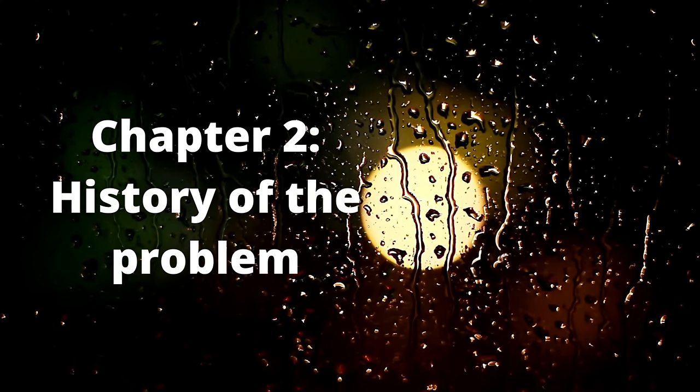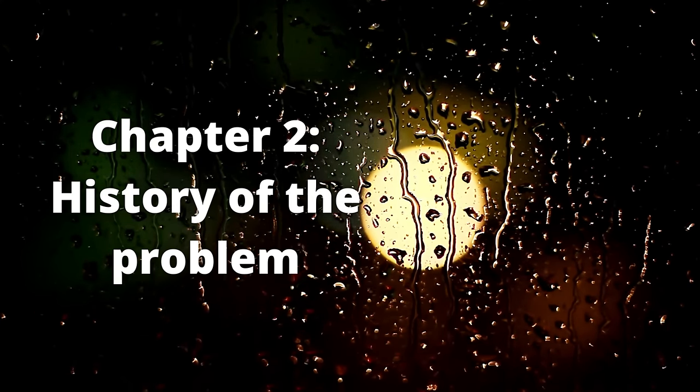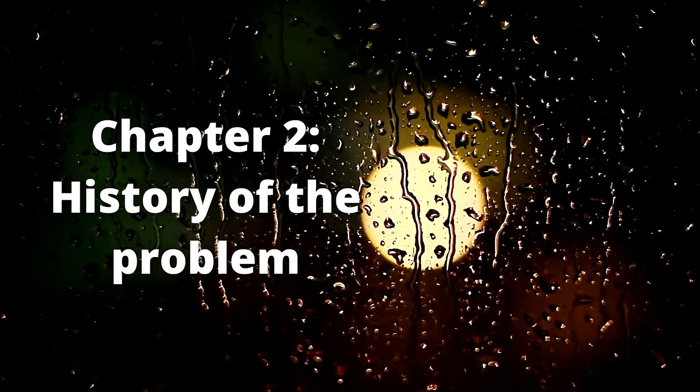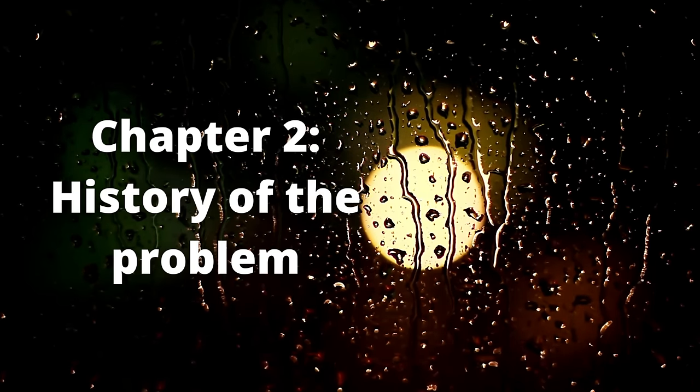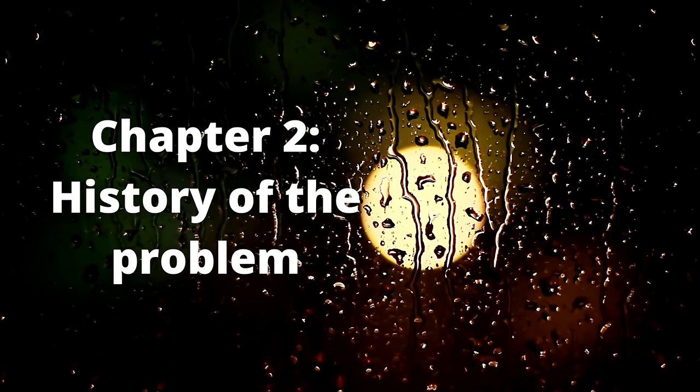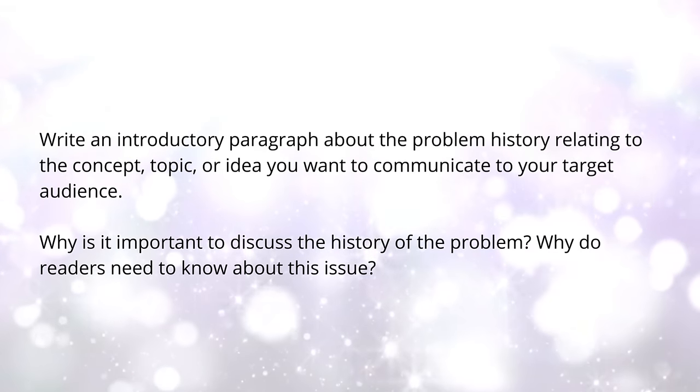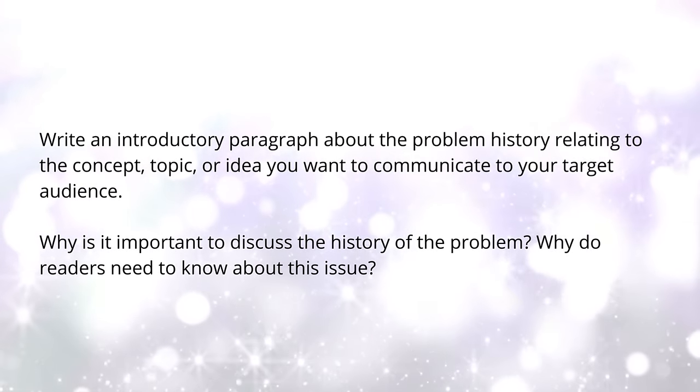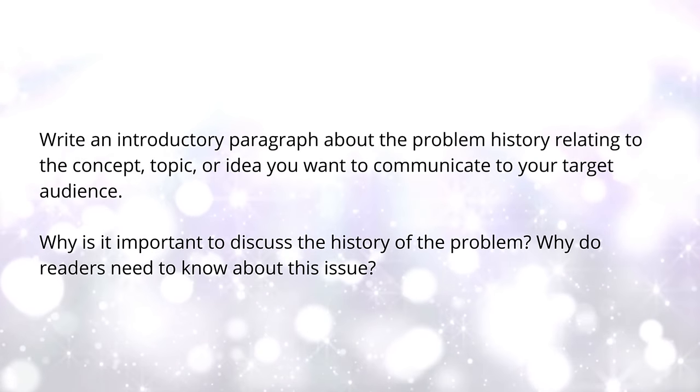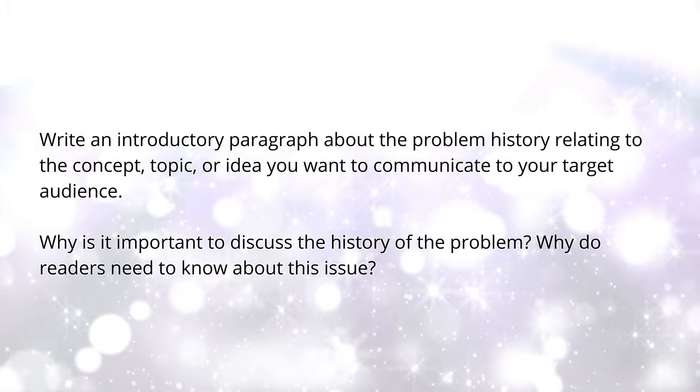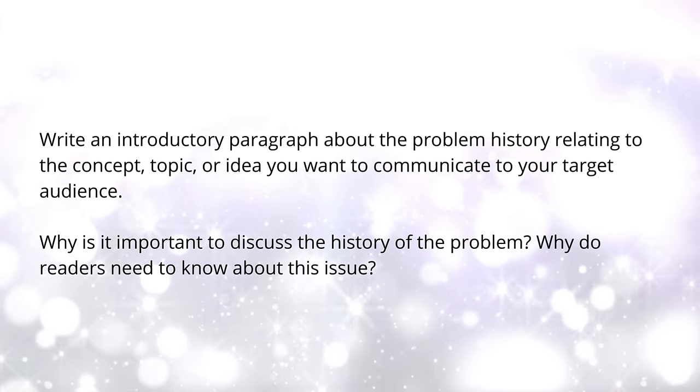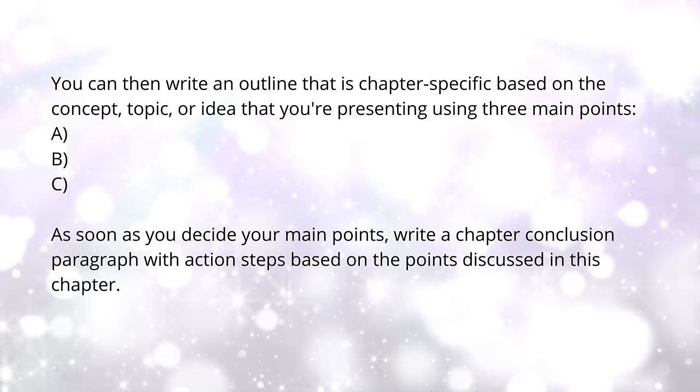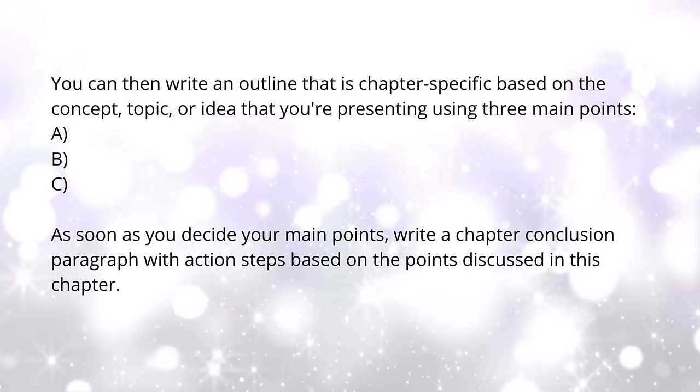Chapter two, history of the problem. The first step in chapter two is to ask yourself: where did this all begin, all the way through, where are we now? In this chapter, you're discussing the history of the problem that you're trying to solve based on your central idea and the message that you want to convey to your readers. Write an introductory paragraph about the problem, the history of this problem, and how it relates to your overall message for the book and what you want to communicate to your target audience and what they should know. You then want to ask yourself, in terms of the history of the problem, why readers need to know about this issue.